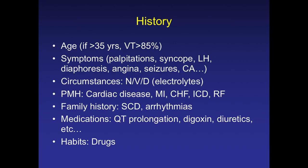Good clinical assessment involves physical examination, ECG, and a possible EP study. Regarding age: if patients are older than 35 years, 85% of wide complex tachycardias will be ventricular tachycardia. Ask about symptoms during the arrhythmia — palpitation, syncope, diaphoresis, especially with associated angina or seizures. These suggest a pathological cause. Also check electrolytes, since hypokalemia can be an underlying cause, and ask about associated cardiac diseases such as coronary artery disease or prior myocardial infarction.